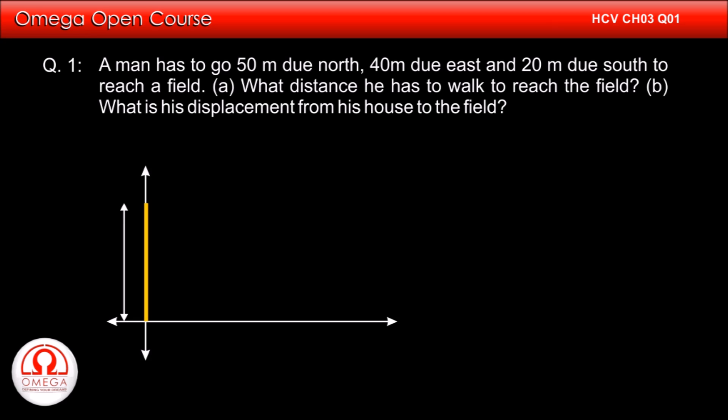A man has to go 50m due north, 40m due east and 20m due south to reach a field. A) What distance he has to walk to reach the field? B) What is his displacement from his house to the field?